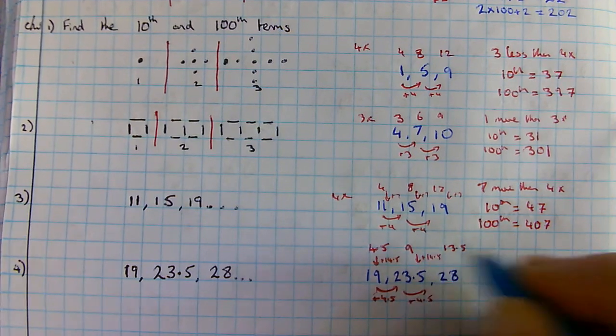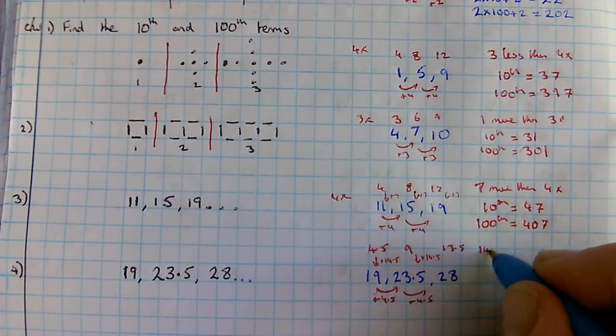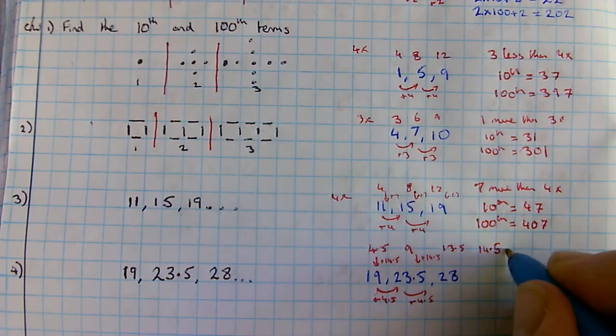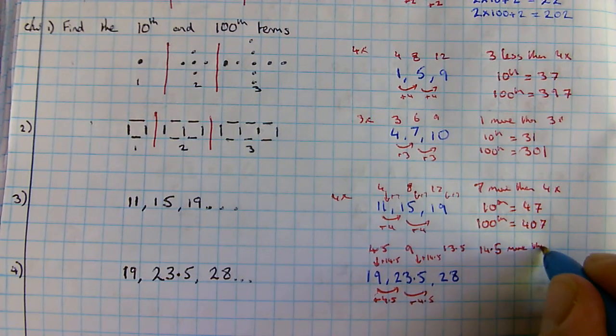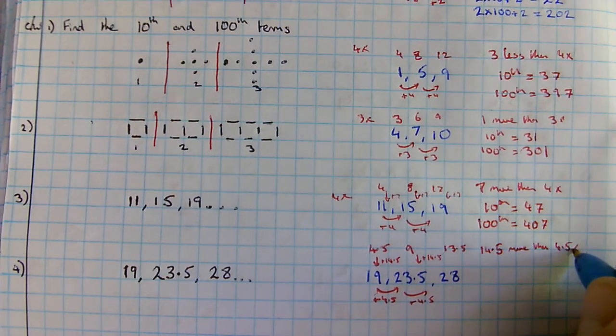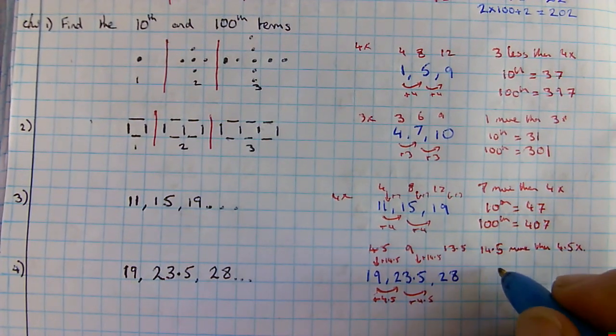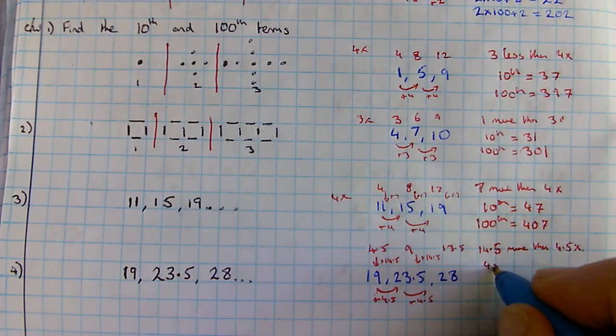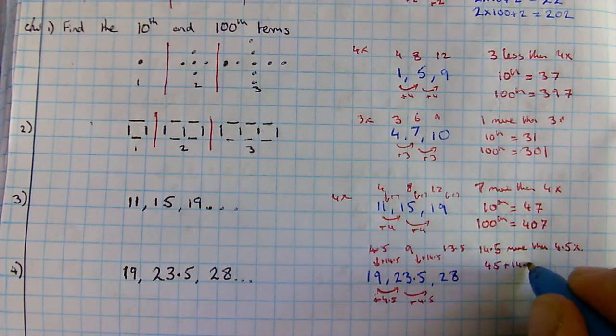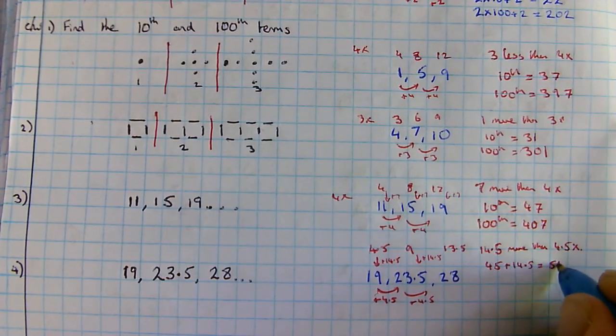This would probably be on a calculator paper, so it's 14.5 more than 4.5 times table. 4.5 times ten is forty-five. Add 14.5. Forty-five add 14.5 gives me 59.5.